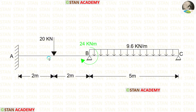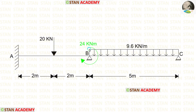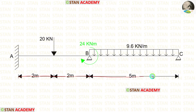In span AB there is a point load of 20 kN acting at the center. In span BC there is a uniformly distributed load of 9.6 kN per meter acting for the full span. In support B, we have a couple moment of 24 kNm acting in the clockwise direction. Length of AB is 4 meters and length of BC is 5 meters.